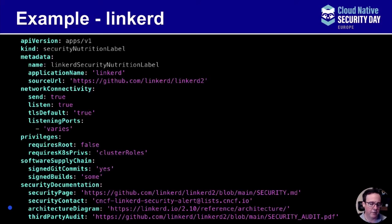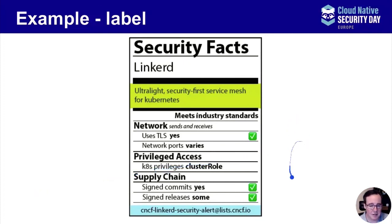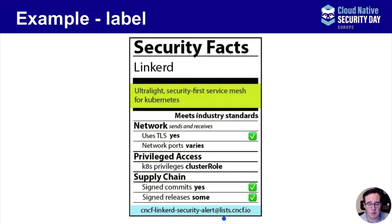Going from YAML into a graphic format — this is a mockup I made for Linkerd. It's simple and easy to consume visually. It shows checkboxes for industry standards they're meeting, a brief description of the project name, and importantly, who to contact if there's a problem. I left out variable ports and cluster role binding as they didn't quite fit 'industry standards.' Maybe there should be a few more things, and possibly links rendered in HTML to the security pages — we'll see how that evolves.